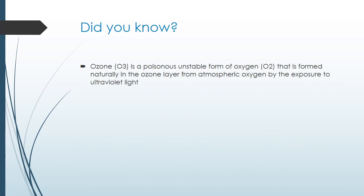Ozone, O3, is a poisonous, unstable form of oxygen, O2, that is formed naturally in the ozone layer from atmospheric oxygen by exposure to ultraviolet light.